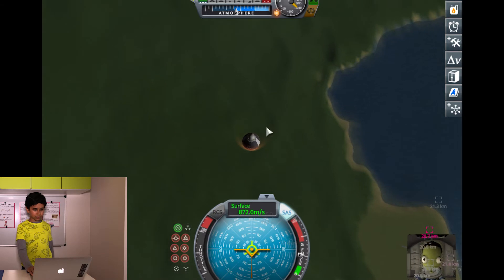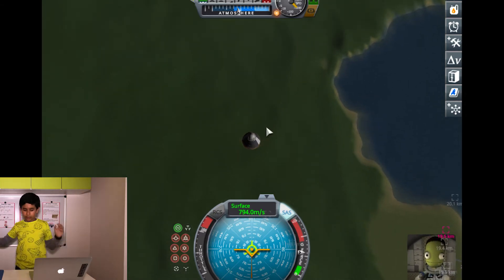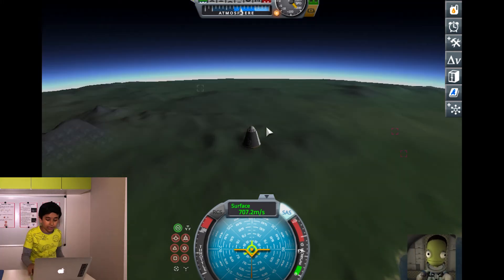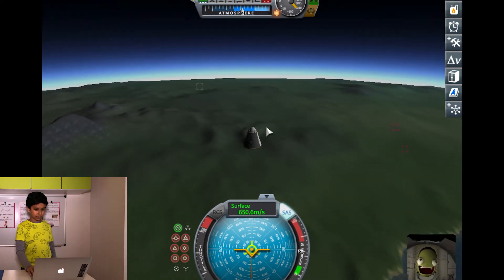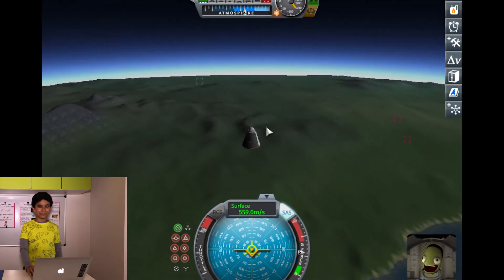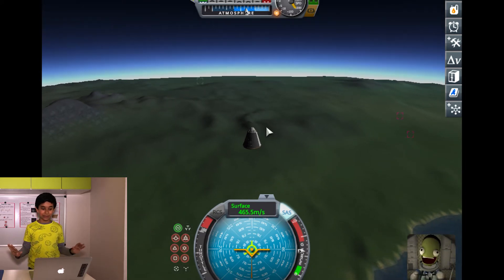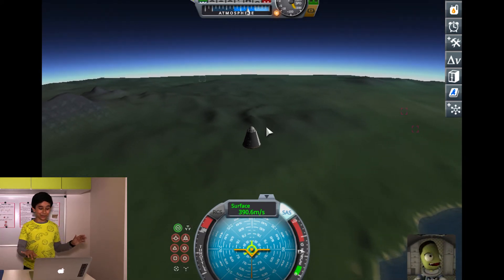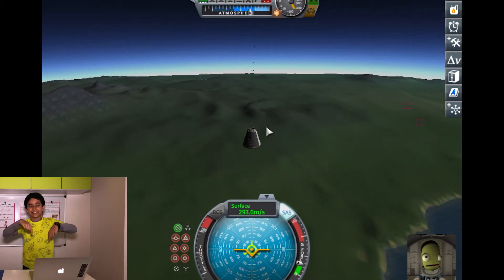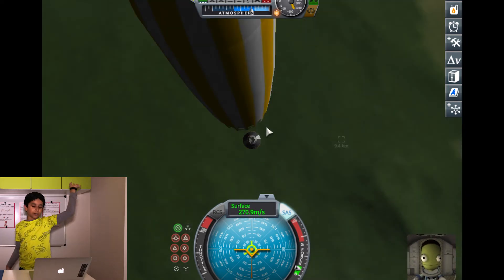So the parachute will soon inflate. And what that will do is, the drag should slow it down. And we should achieve a safe landing. What was that? I just heard some explosions. I don't know what those were. Because my rocket is still fine. Oh! I know. I discarded the engine and the fuel tanks earlier. That must have gone boom boom.